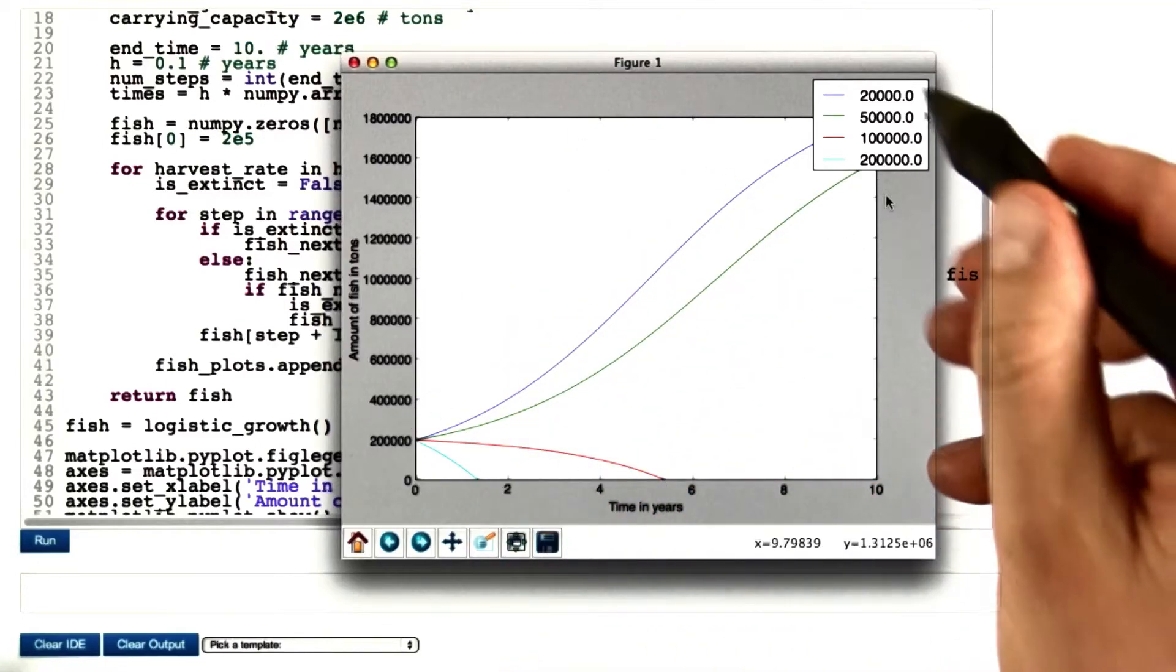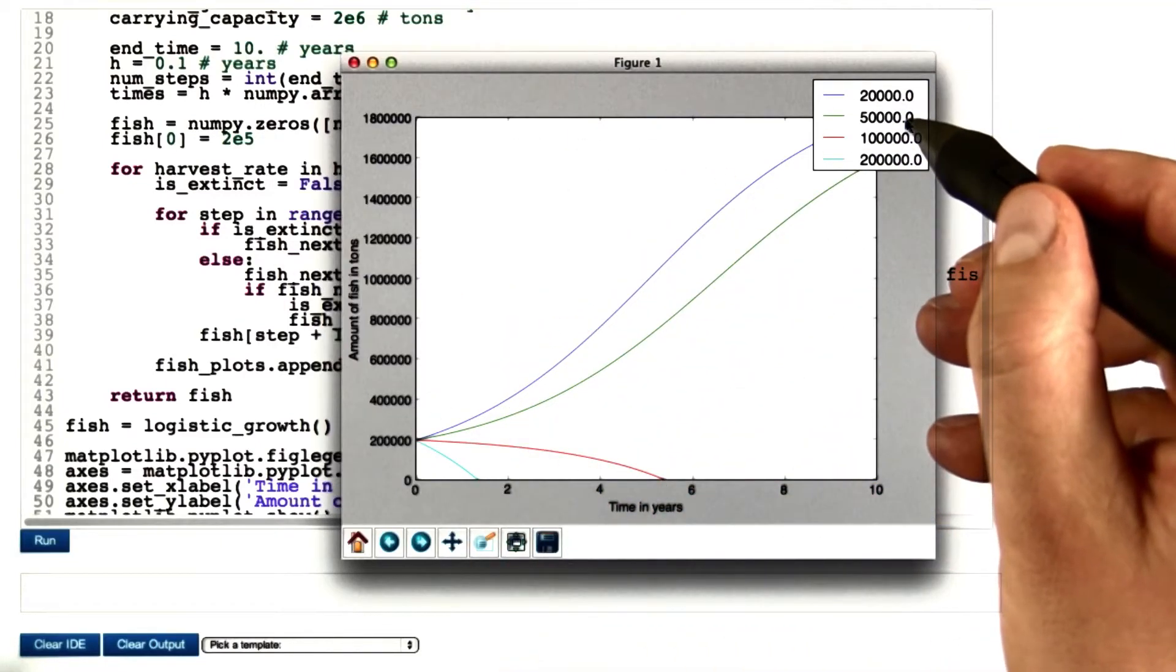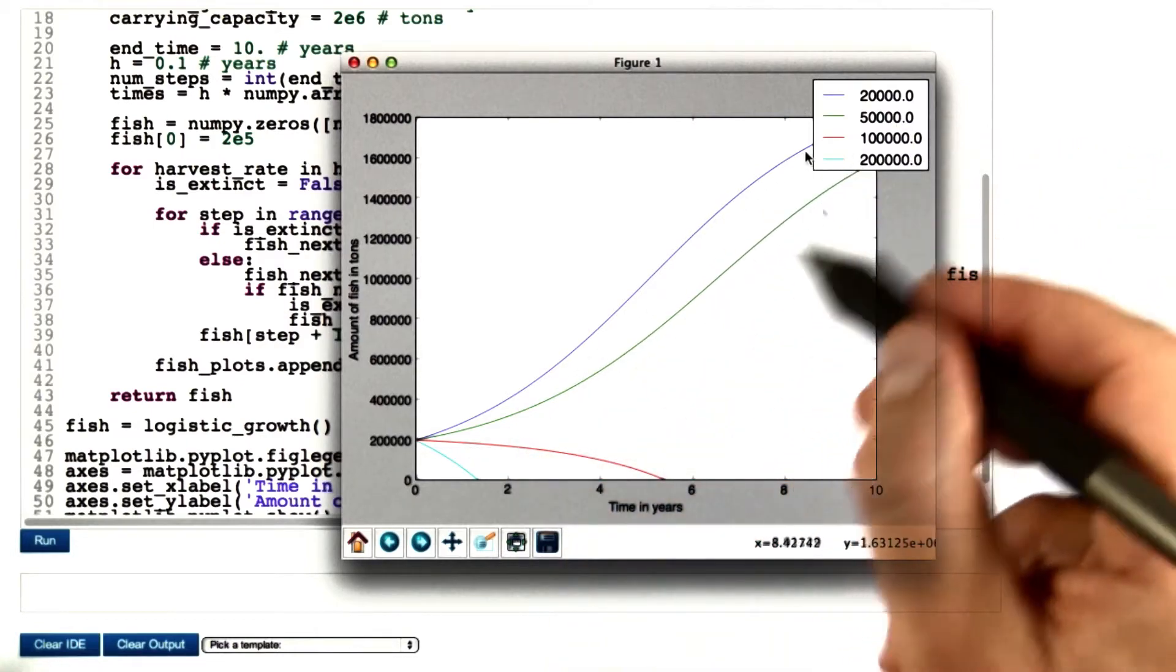Let's first have a look at the output. You see that with rates of 20,000 and 50,000 tons per year, we do not seem to be overfishing.